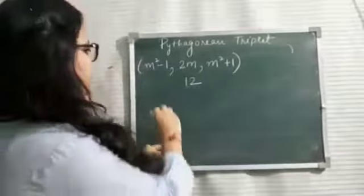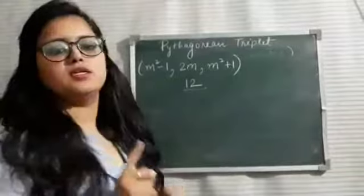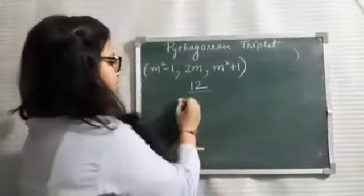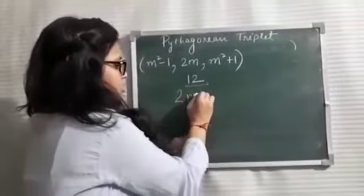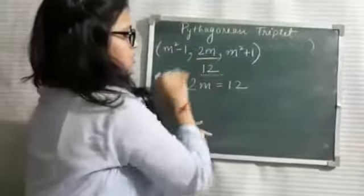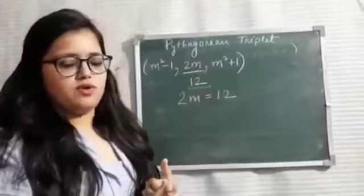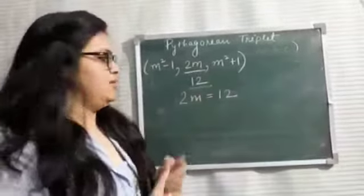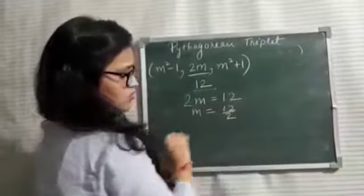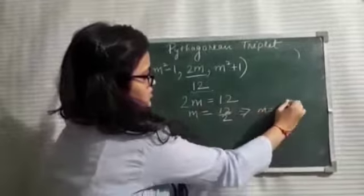First of all, whenever the given number is an even number, we directly put that equals to 2M. See, 2M is part of a Pythagorean triplet. Our first preference is to find out the value of M. M is equal to 12 upon 2, so M is equal to 6.